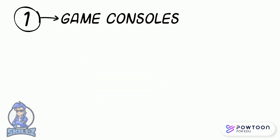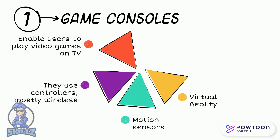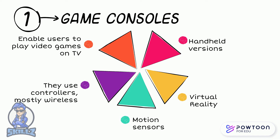Moving on to consoles: game consoles are designed to enable users to play video games on their television screens. Games are provided on disk or as downloads from the internet. They use controllers, which are often wireless, to control the characters, vehicles, and objects in the game. Some consoles use motion sensors, while others use VR to immerse the player in a realistic gaming experience. There are also handheld versions available on smartphones.